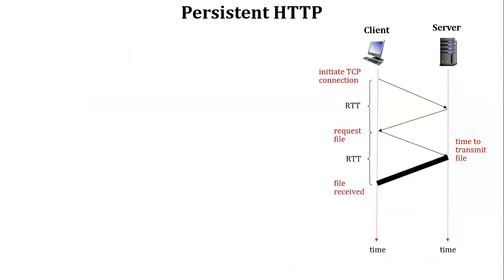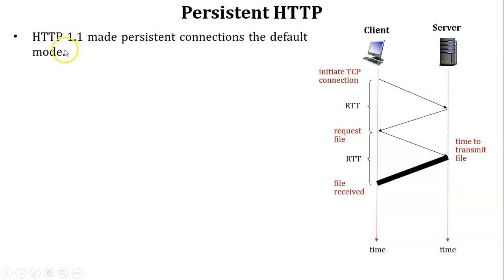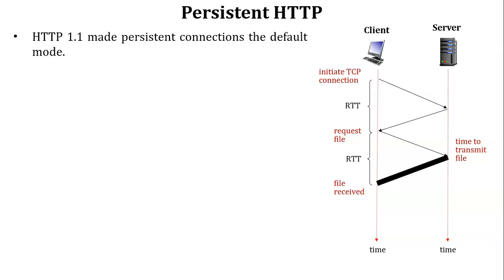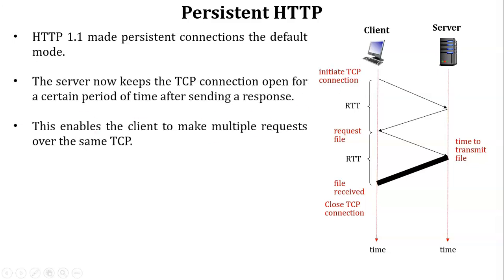Next, persistent HTTP. The default mode is HTTP version 1.1. In the diagram, the client initiates a TCP connection request, the server accepts — one RTT is used. The client sends a request file and the server responds — the file is received at the client side. When there are no more requests, the TCP connection is closed. In persistent HTTP, multiple files can be accessed from the server over a single TCP connection.